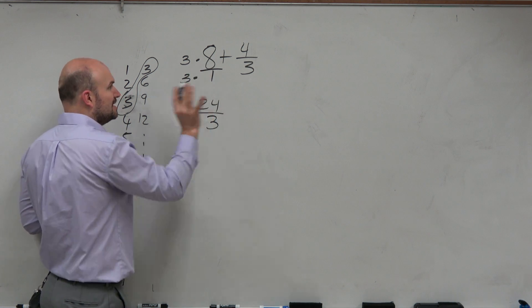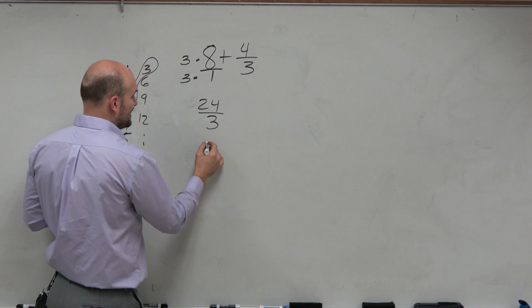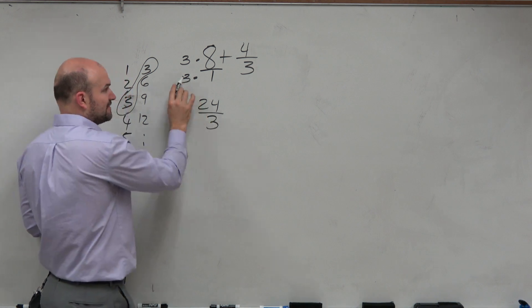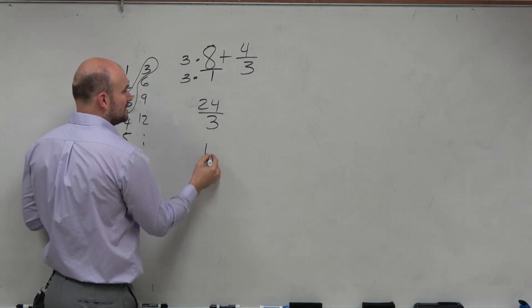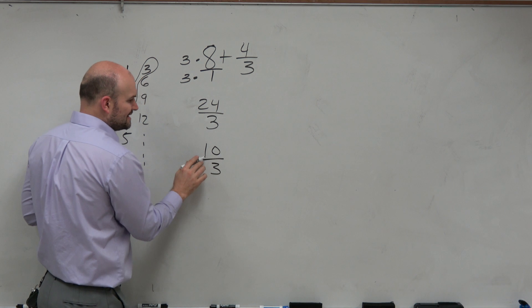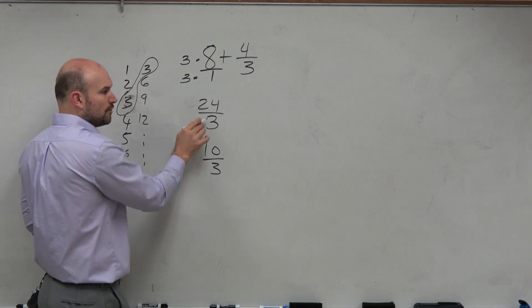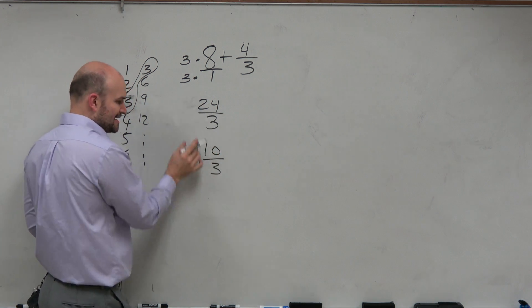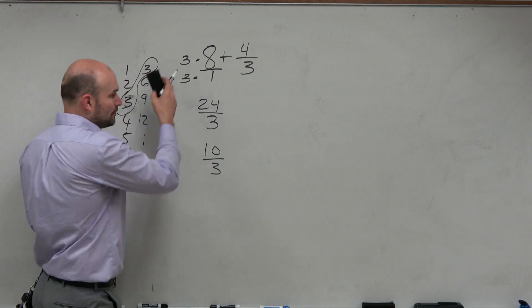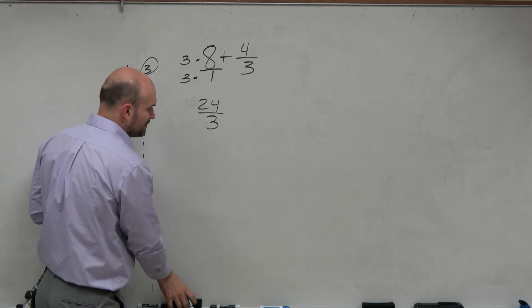Now, let's just pretend that we added 2 instead. So therefore, let's say we added 2 in the top and the bottom. So therefore, we'd have 10 thirds. 10 thirds is not equivalent to 24 thirds, right? Those are not the same fractions. So that's why adding is not going to work. It's not going to produce an equivalent fraction.